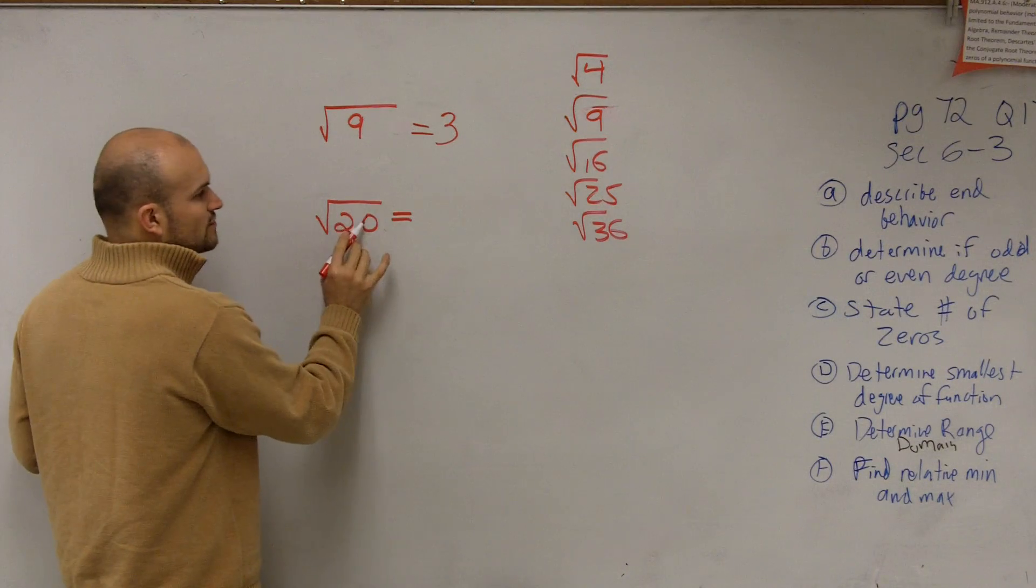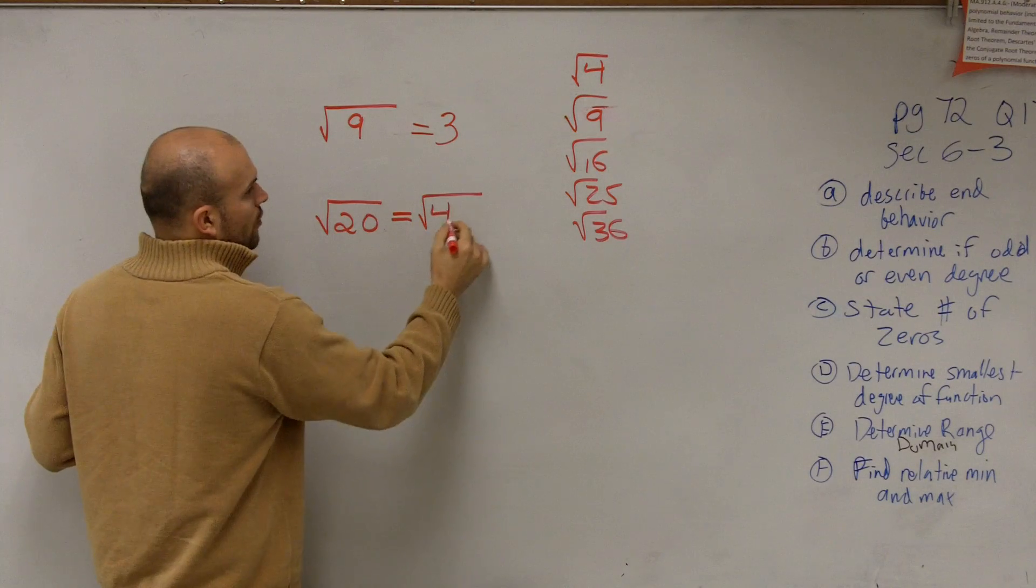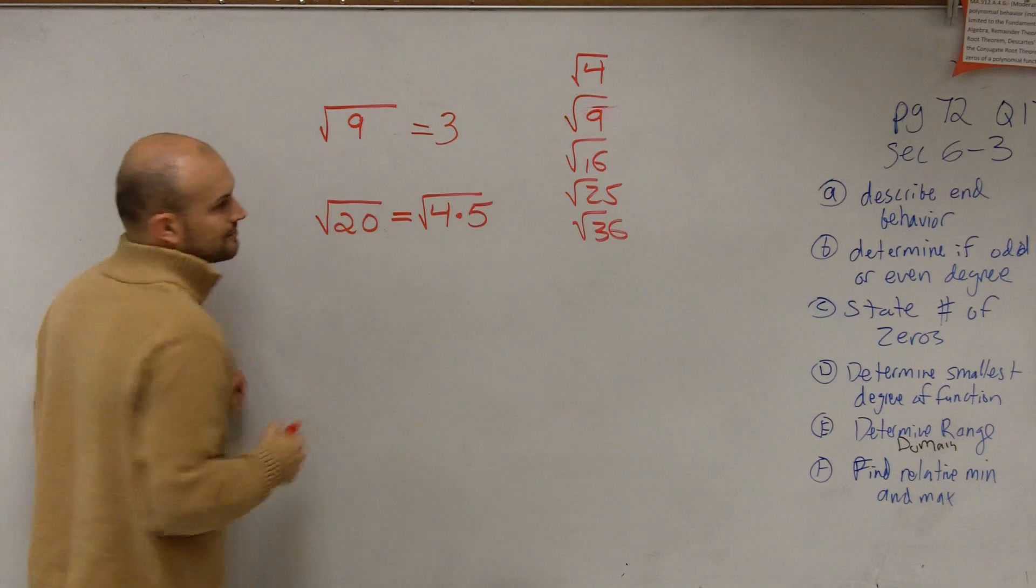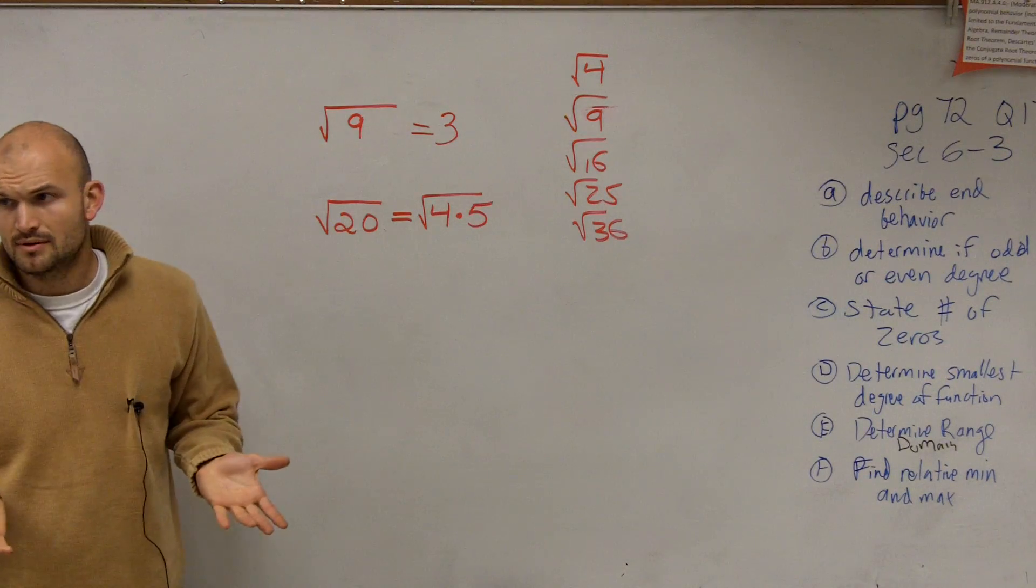the square root of 20 equals the square root of 4 times 5? Is that OK? Yeah.